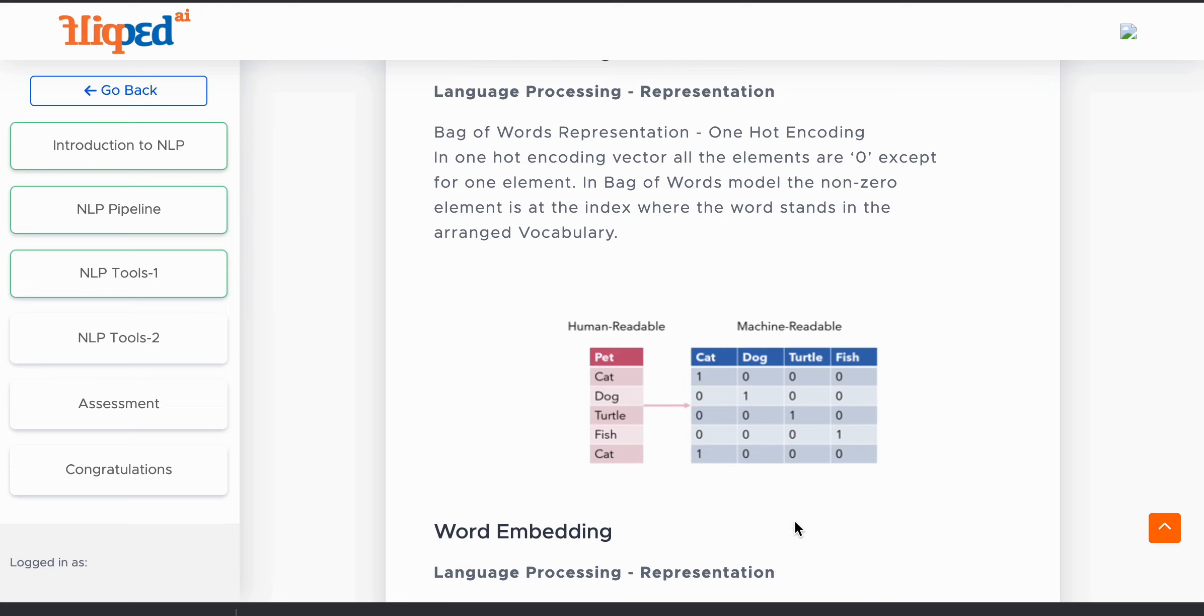Let's try to understand by seeing this example of pets, which are arranged in a vector format. On the left-hand side, the names of the pets are arranged in a way that humans could understand. On the right-hand side, it is arranged as zeros and ones as machine readable.